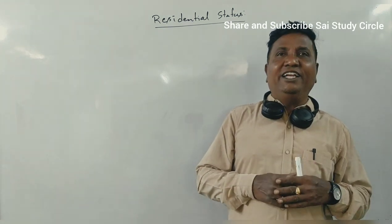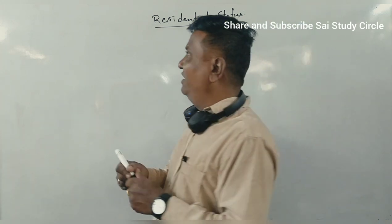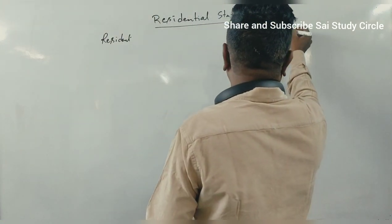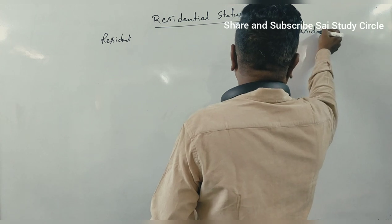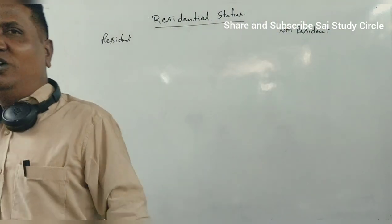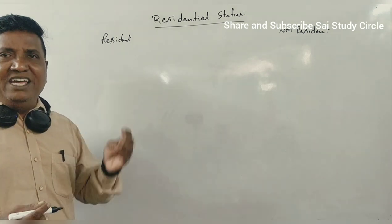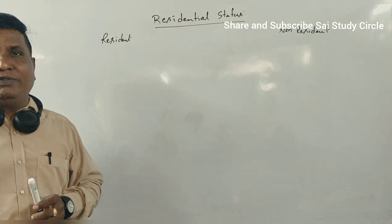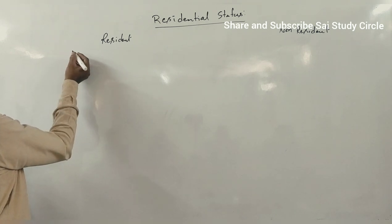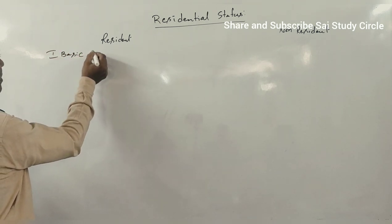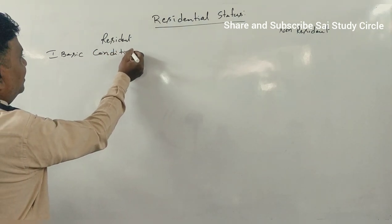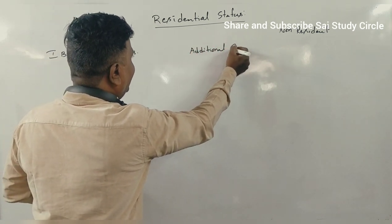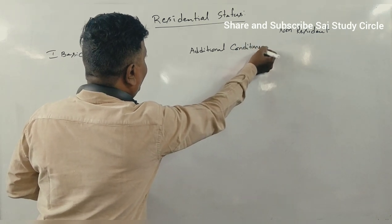For the purpose of the Income Tax Act, a person becomes a resident if he satisfies some of the conditions given by the Income Tax Act of 1961. We have resident and non-resident categories. To become a resident of India, an individual has to satisfy two types of conditions: basic conditions and additional conditions.